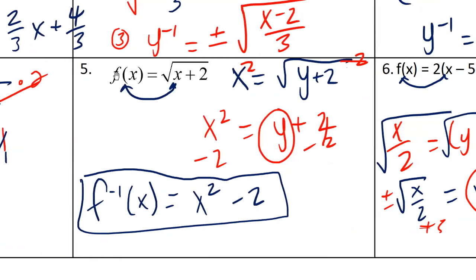Number five: switch x and y. The opposite of taking the square root is to square, so square both sides, giving x² = y + 2. The opposite of adding 2 is to subtract 2, so y is by itself. The inverse equals x² − 2.